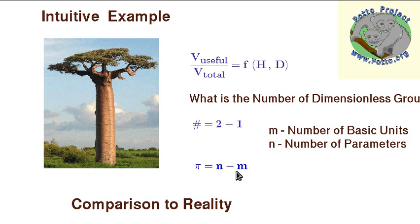Buckingham extended this and suggested that the number of parameters n minus the number of basic units will give us the number of dimensionless groups. Of course in reality that's not really true, but this gives us the minimum number of dimensionless groups.